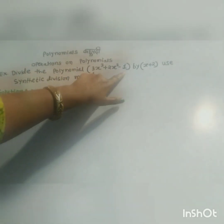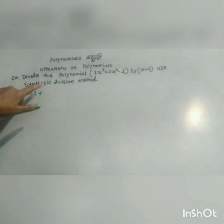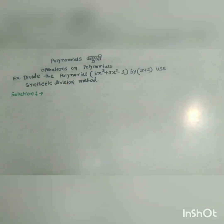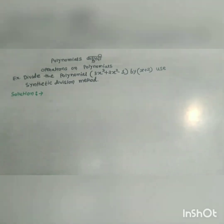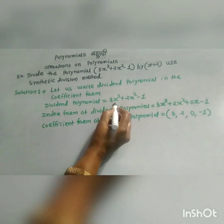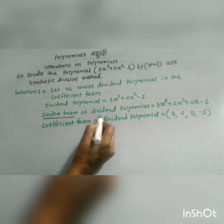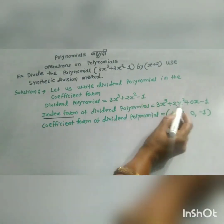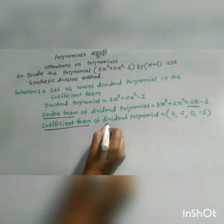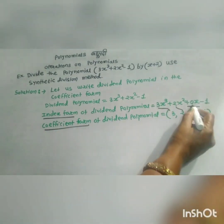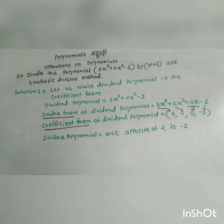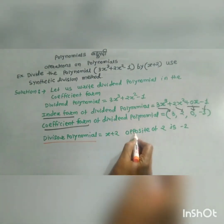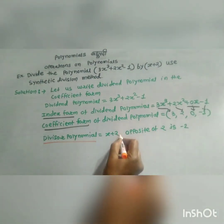Divide the polynomial 3x cubed plus 2x squared minus 1 by x plus 2 using the synthetic division method. First write the index form of the dividend: 3x cubed plus 2x squared plus 0x minus 1. The coefficient form of the dividend is 3, 2, 0, and negative 1. The divisor is x plus 2, so the opposite of 2 is negative 2.